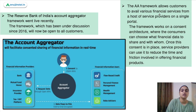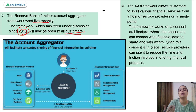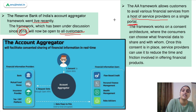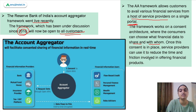The Reserve Bank of India's account aggregator framework went live recently. There have been discussions about this framework since 2016 and now it is open to all customers. Many banks and institutions have come together to provide these account aggregation services. The framework allows customers to avail various financial services from a host of service providers on a single portal. It works on a consent architecture where consumers can choose what financial data they want to share and with whom. Once consent is in place, service providers can use it to reduce the time and friction involved in offering financial products.